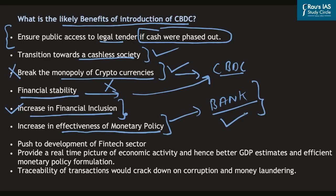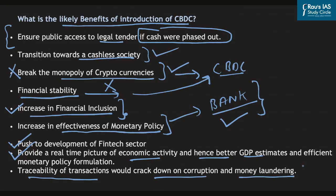Presently, for transmission of monetary policy, central banks rely on intermediary banks, and effectiveness depends on how banks adjust lending rates based on policy rates. By introducing digital currency, this need for intermediaries may be done away with, which will be beneficial for effective monetary policy transmission. Further, it will give a push to the fintech sector, provide real-time economic activity data for better GDP estimates, and help in traceability of transactions — cracking down on corruption, money laundering, and the black economy.